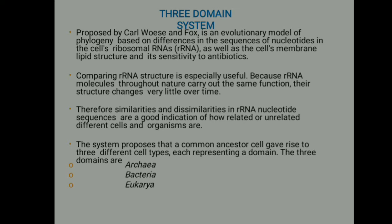Next, we have the Three Domain system proposed by Carl Woese and Fox. This is an evolutionary model of phylogeny based on differences in the sequence of nucleotides in ribosomal RNAs, as well as cell membrane lipid structure and sensitivity to antibiotics. Comparing rRNA structure is especially useful because rRNA molecules throughout nature carry out the same function and their structure changes very little over time. Therefore, similarities and dissimilarities in rRNA nucleotide sequences are a good indication of how related or unrelated different cells or organisms are.